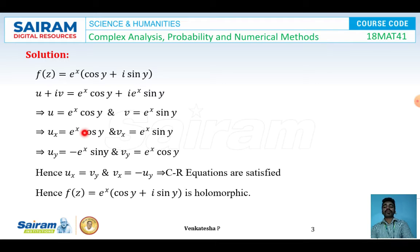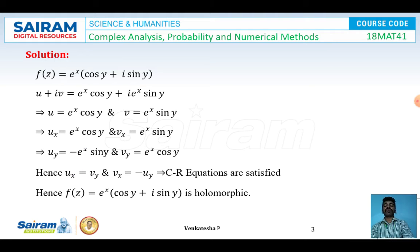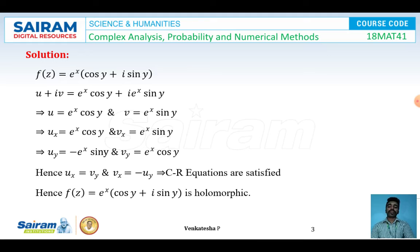So we have u_x = e^x cos y, v_x = e^x sin y, u_y = -e^x sin y, and v_y = e^x cos y. We can see that u_x = v_y and v_x = -u_y, which is the required condition for the CR equations. Since CR equations are satisfied, f(z) = e^x(cos y + i sin y) is a holomorphic function.